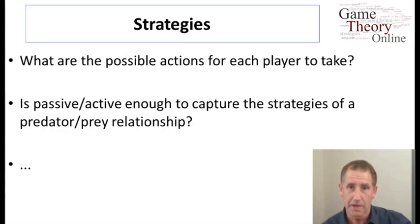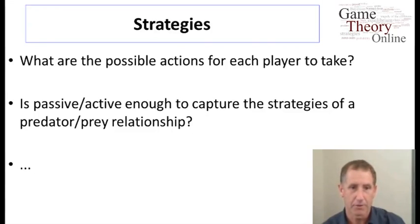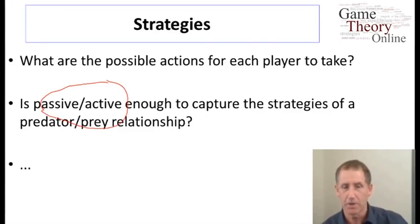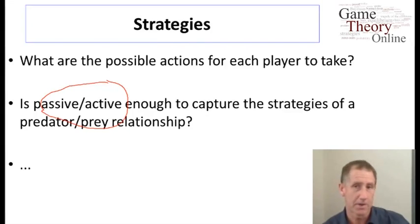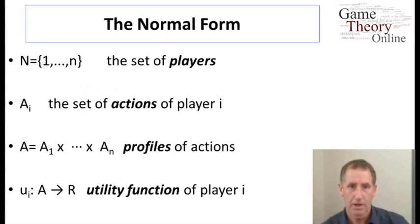Once we do this, we need to decide what strategies are available to them. Every model captures some information, not others. So for example, is speaking about active versus passive enough to capture everything we want about the relation between predator and prey? Well, it's up to us about what we want to model. And the same goes for all other elements of the model.